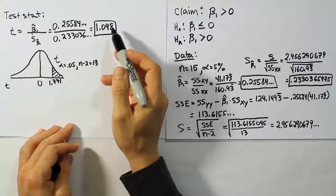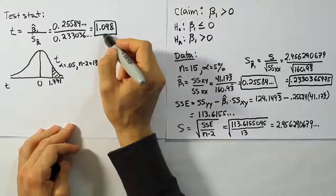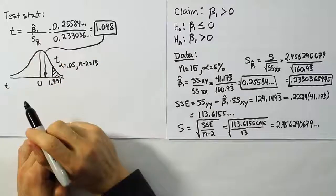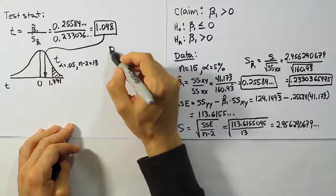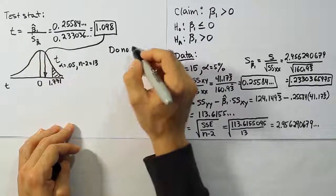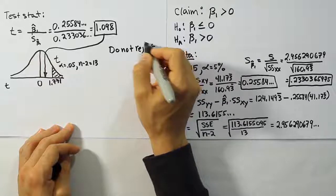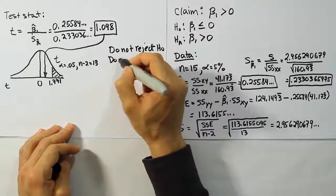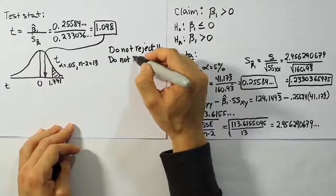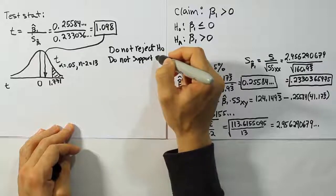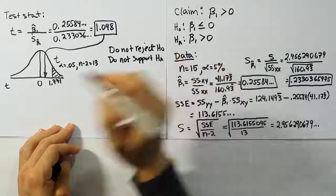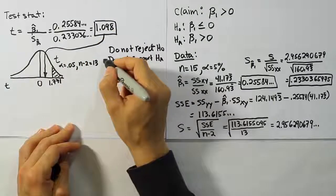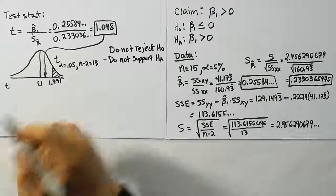Now we're going to compare that against our test stat. Of course, our test stat here, we can see, does not quite get out that far. It ends up landing over here in the white space. So our conclusion is, therefore, do not reject H0. And therefore, do not support HA. Okay, now when we look at our claim, we see our claim is the same as HA. So we're going to use the phrase, the sample data does not support the claim.